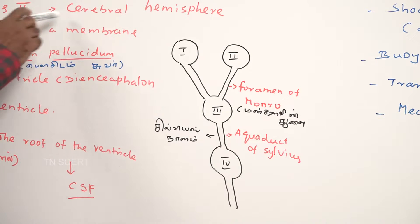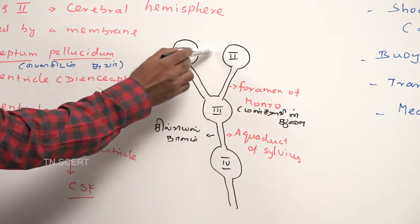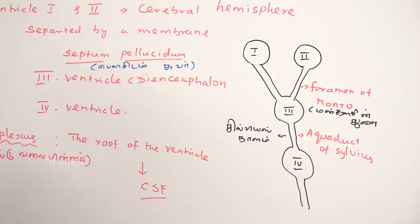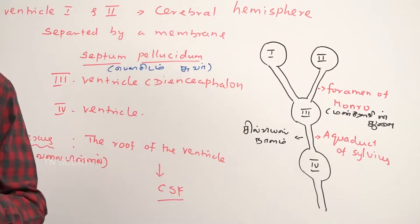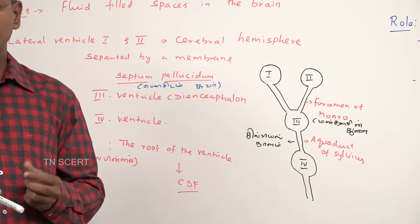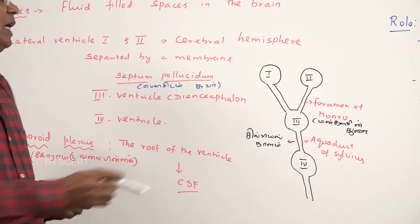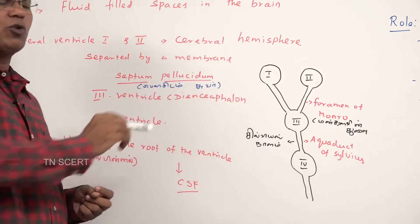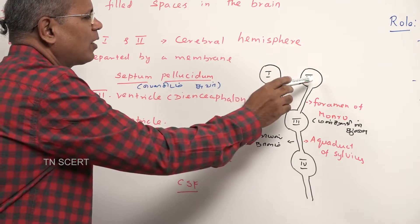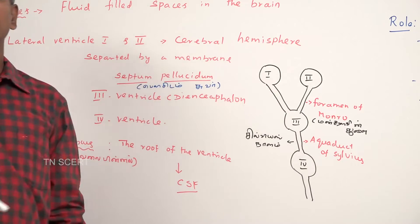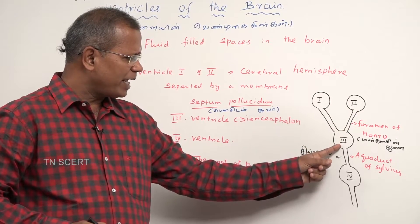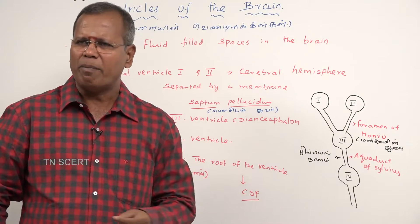Lateral ventricles 1 and 2 are separated by a membrane called septum pellucidum, which is present in the cerebral hemisphere. Lateral ventricle 1 and lateral ventricle 2 communicate with the third ventricle through the foramen of Monro.